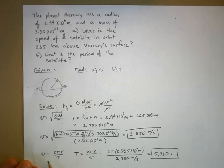And from that, since it's a circular orbit, we can figure out the period. It's 2 pi r over the period, so solve for the period and get 5,960 seconds. And that's it.